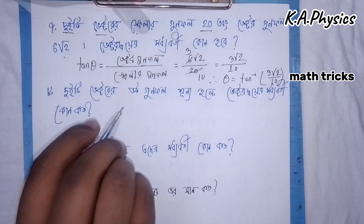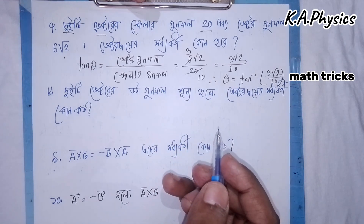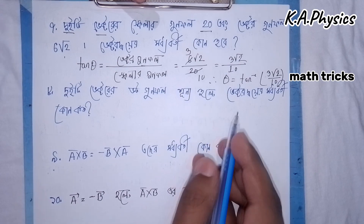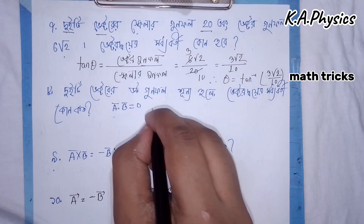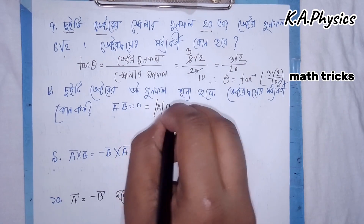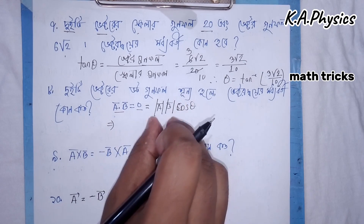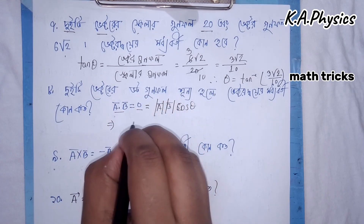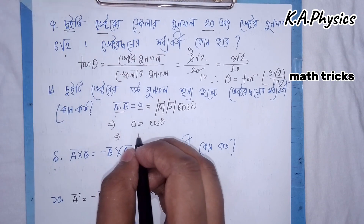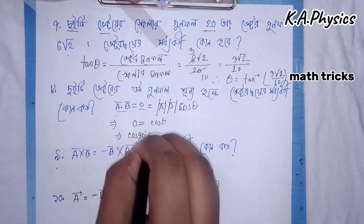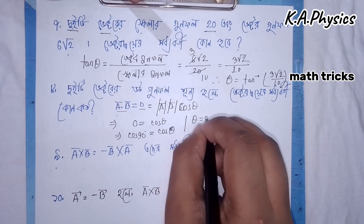The dot product function: A vector dot B vector equal to zero. This means the vectors are perpendicular. The dot product equals |A||B|·cos(theta). If cos(theta) equals zero, then theta equals 90 degrees — the vectors are perpendicular.